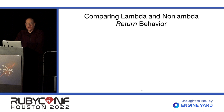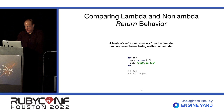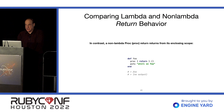Let's compare the behavior of Lambdas and non-Lambda Procs. The return behavior is different. A Lambda's return returns only from the Lambda and not from the enclosing method. For example, in a method foo with a Lambda executed in place, we do see output after the lambda's return — so the Lambda returned from itself but not from the foo method. In contrast, a non-Lambda Proc's return returns from its enclosing scope. If we do the same thing with a Proc instead of a Lambda, we don't see that output because it has returned from the method.